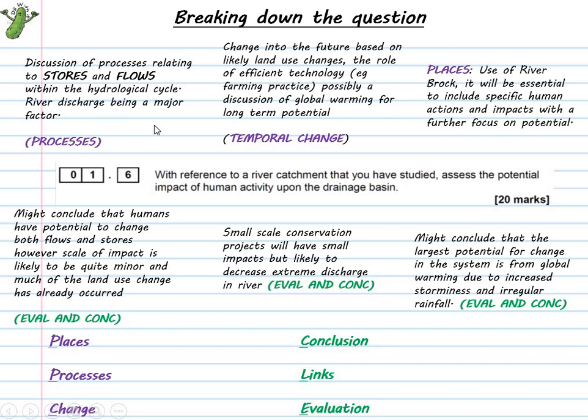In terms of place, for me it's the River Brock in Lancashire, which is one of the textbook examples. But it's going to be really important, especially for this question, to show that I truly understand the location. I don't just remember a few odd names of towns and the wider area. I need to make it really clear that I understand place.